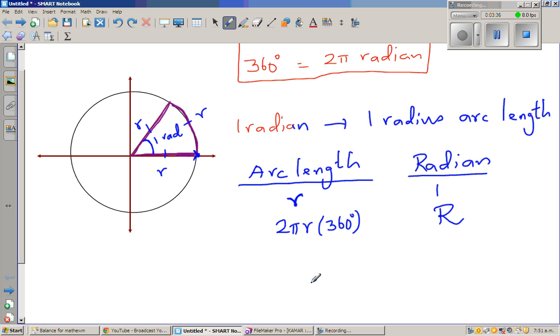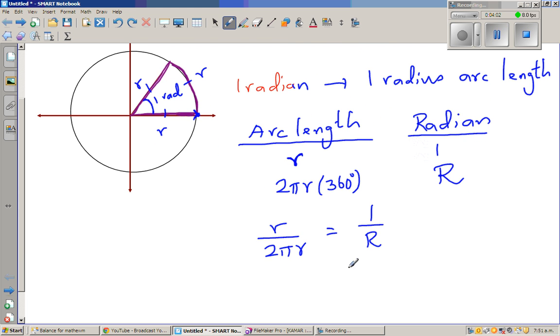So writing this as a ratio, can I say r over 2πr? Because the ratio of this is equal to the ratio of this. This is 1 over R. And this R corresponds to 360 degree. I hope you understand. Again, I'll repeat. When this particle moves 2πr length, it is equivalent to have moved 360 degrees.